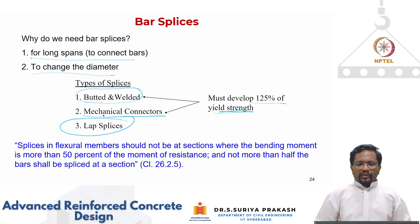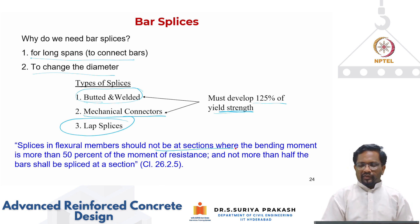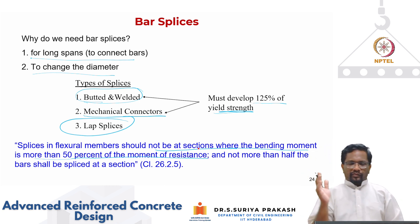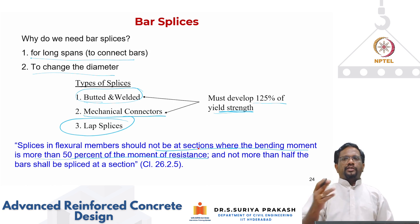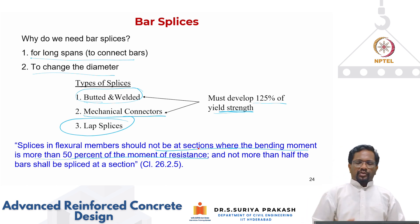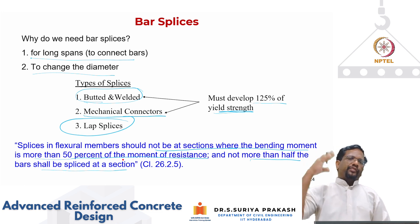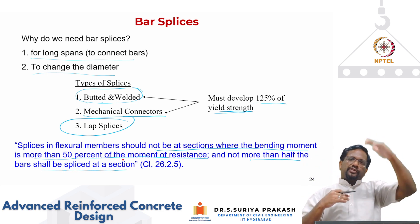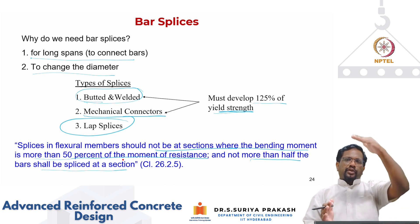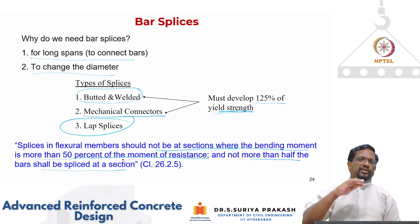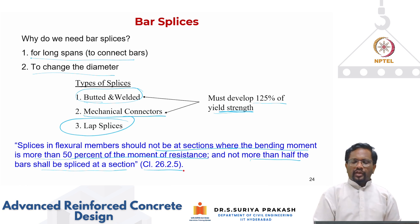The most commonly used splice is the lap splice, where bars are placed side by side and overlapped. As per IS code clause 26.2.5, splices in flexural members should not be placed at sections where the bending moment exceeds 50% of the moment resistance — meaning the capacity must be at least twice the demand. Also, not more than 50% of bars shall be spliced at any one section; the rest must be staggered.